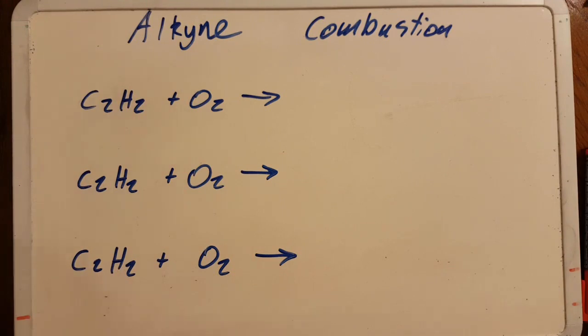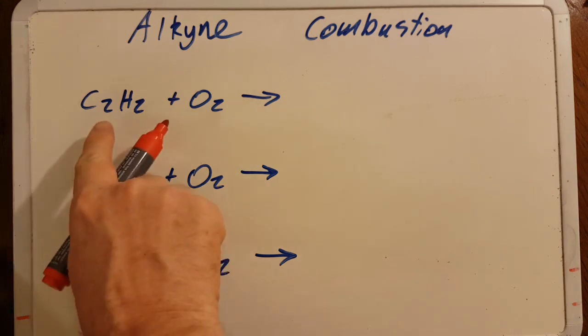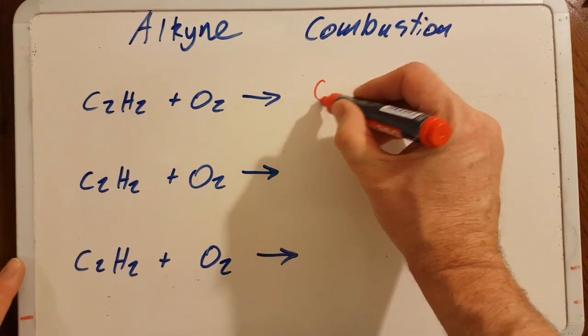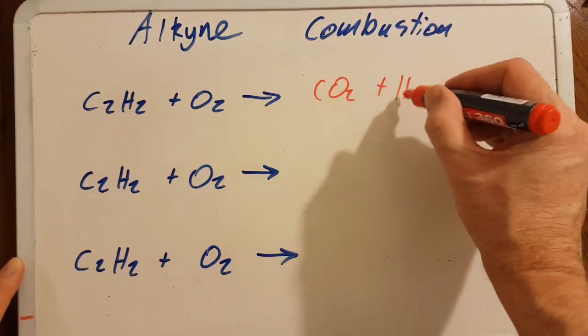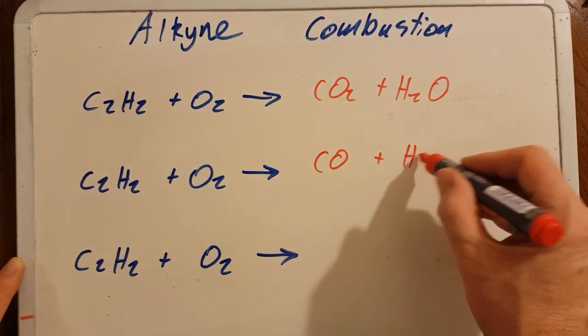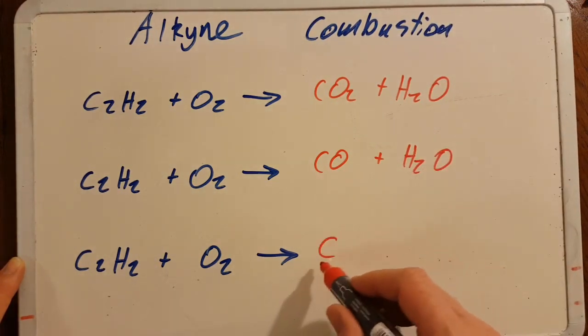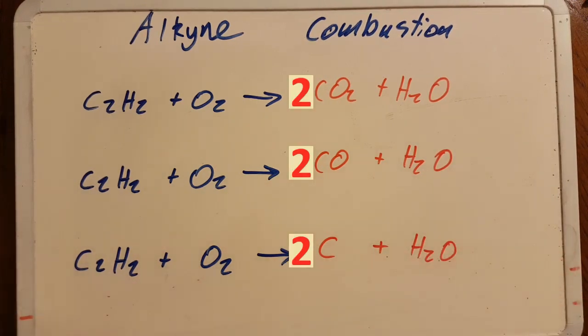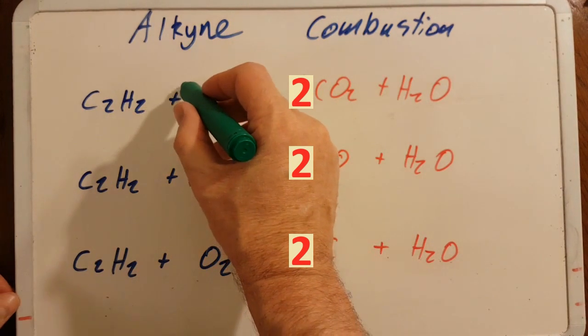There doesn't seem to be much chemistry you need to know for the alkyne. We can look at combustion. Ethyne and oxygen, there are three possible reactions: one producing carbon dioxide and water, carbon monoxide if there's less oxygen available, and finally just carbon, that's really soot and water. That depends on how much oxygen there is.